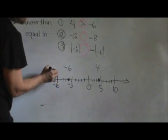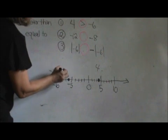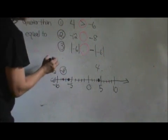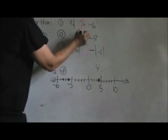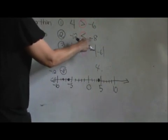Negative 12 is way over here to the left and here is negative 8. And notice negative 8 is actually larger. So that means I am going to draw a less than symbol. Negative 12 is less than negative 8.